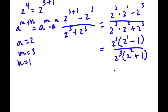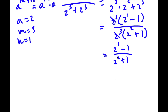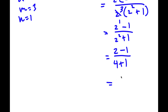Now because both our numerator and denominator have 2 to the power of 3, these two cancel out. So now I'm left with 2 to the power of 1 minus 1 divided by 2 squared plus 1. Now 2 to the power of 1 is equal to 2, so I have 2 minus 1 divided by 2 squared plus 1. 2 squared is 4, so I have 4 plus 1. 2 minus 1 is equal to 1, 4 plus 1 is equal to 5, so 1 over 5 is our answer.